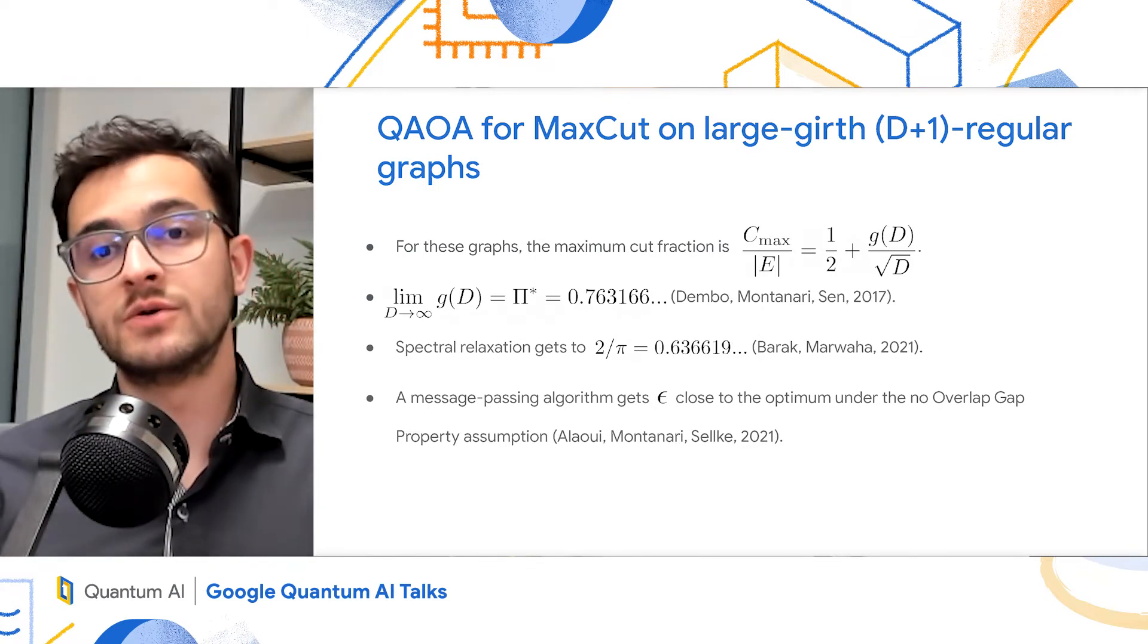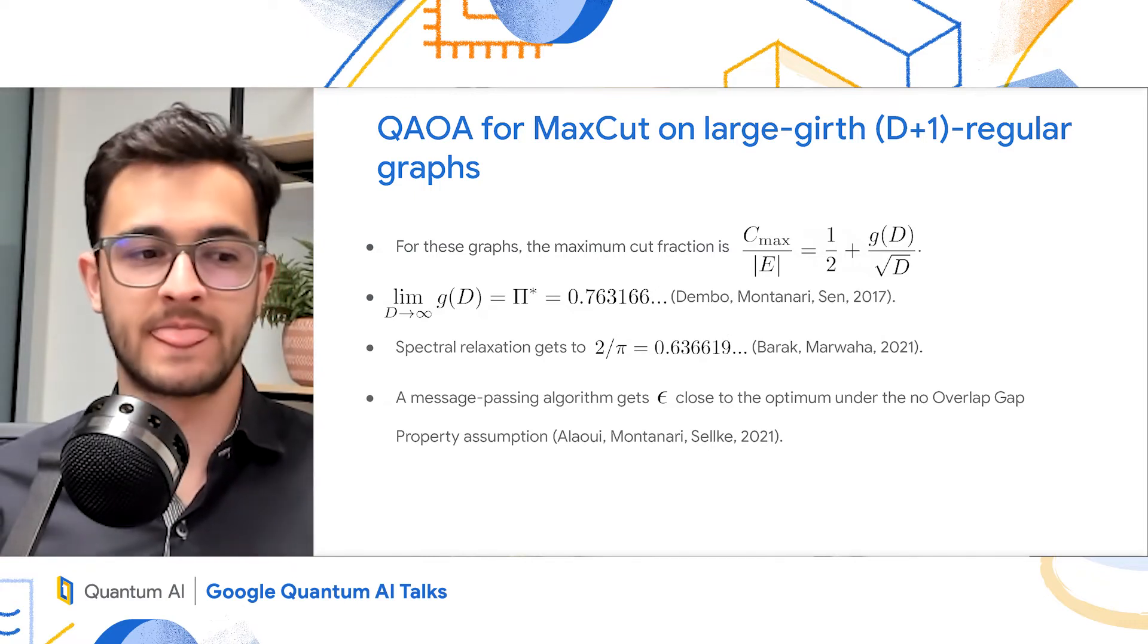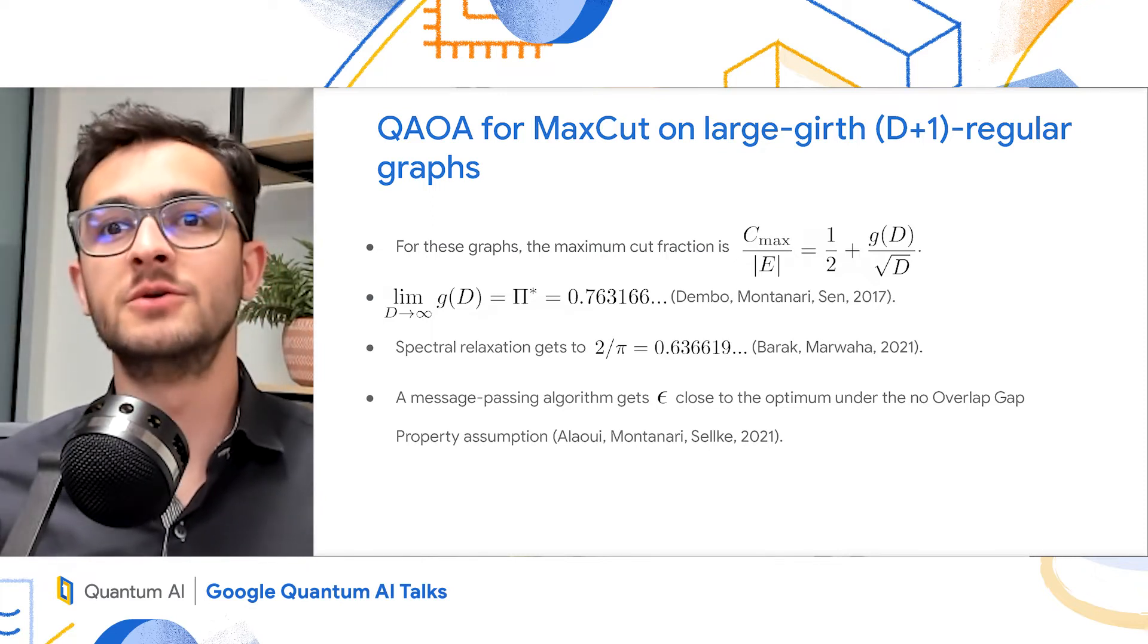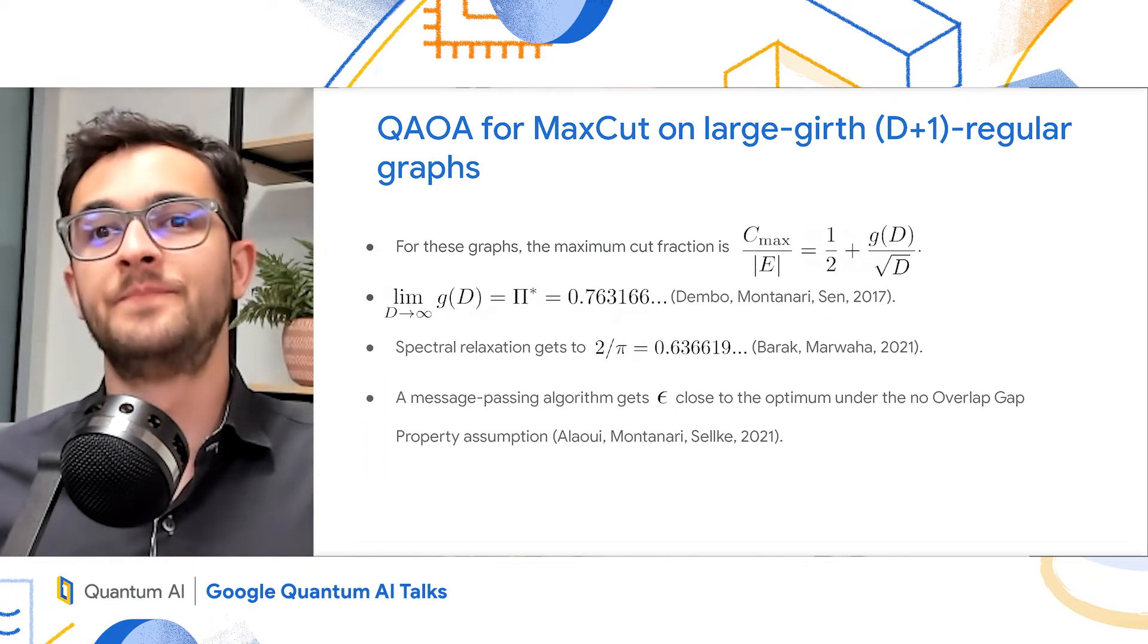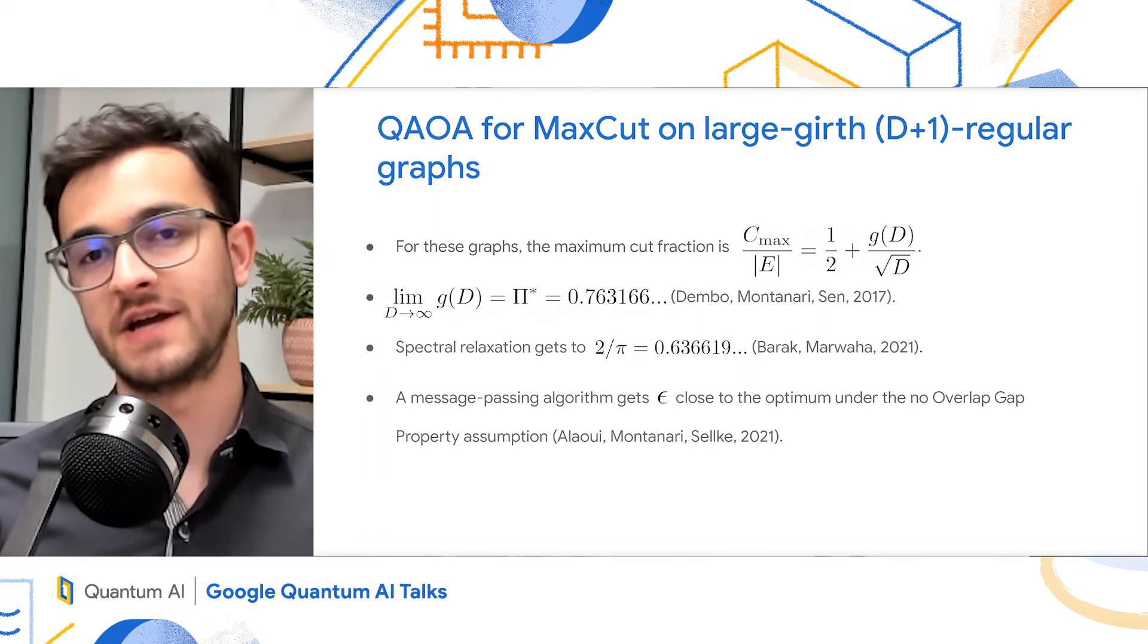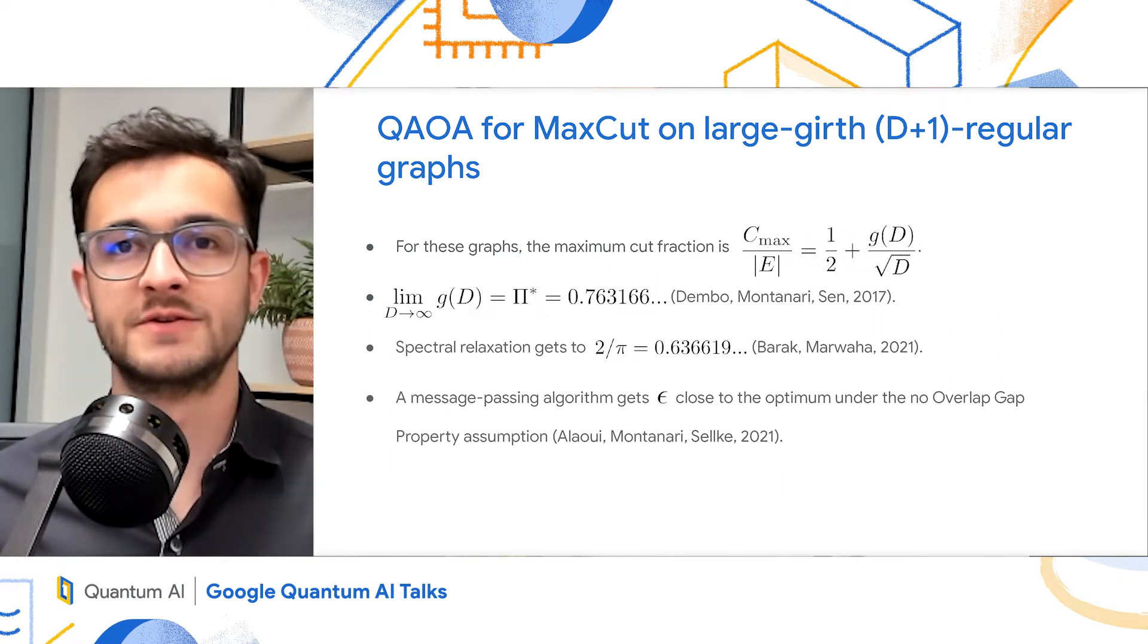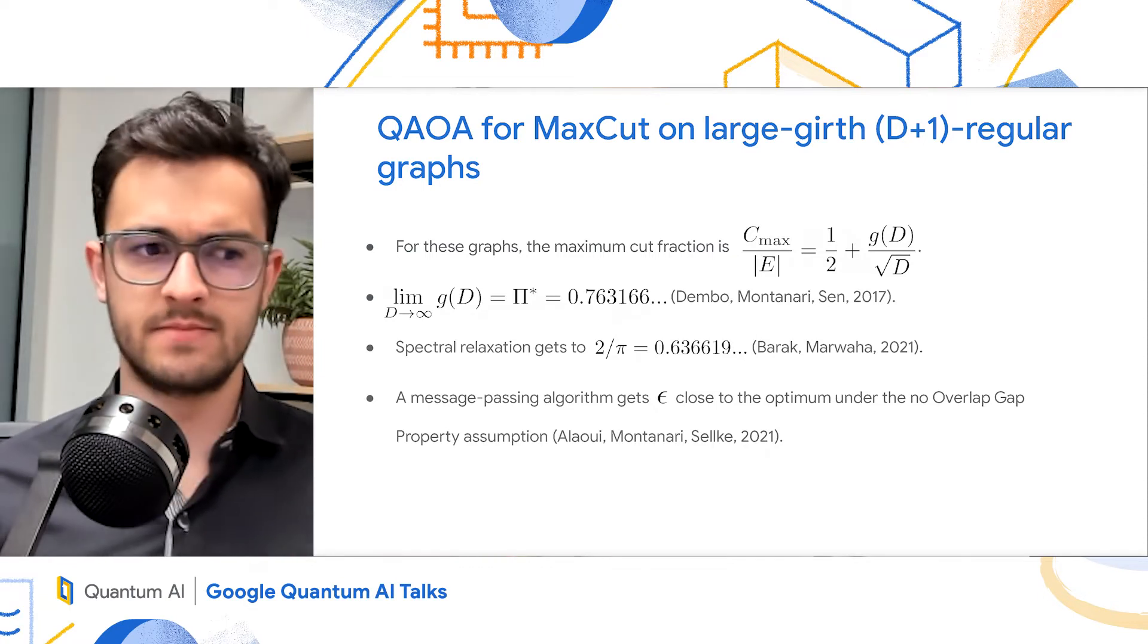Classical algorithms for this problem, again, include spectral relaxation, which again gets 2 over pi. And there's also a message passing algorithm that gets epsilon closer to the optimal. But again, it assumes that the problem does not have the overlap gap property. So you can see a lot of similarities with the SK model.